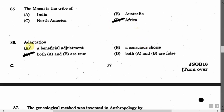The next question is: Adaptation — Option A: Beneficial adjustment. Option B: A conscious choice. Option C: Both A and B are true. Option D: Both A and B are false. The correct answer is Option C, that is both A and B are true.